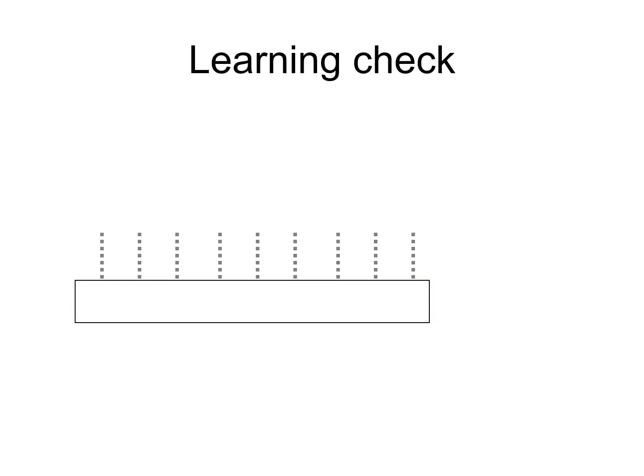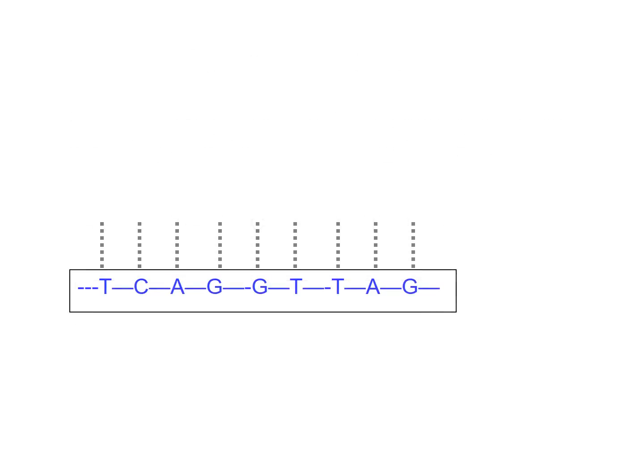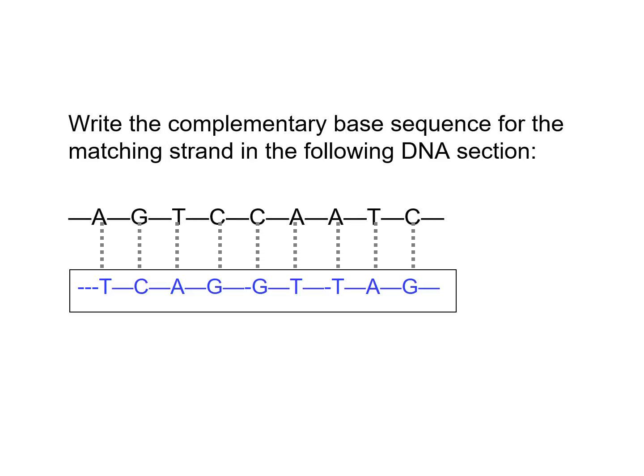Let's check: write the complementary base sequence for this DNA section: A-G-T-C-C-A-A-T-C. The answer is T-C-A-G-G-T-T-A-G. T always goes with A, C always goes with G, and vice versa.